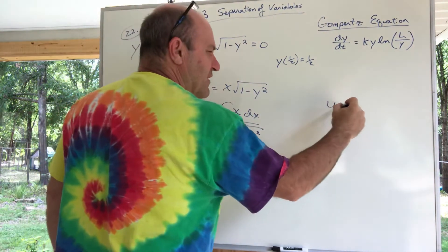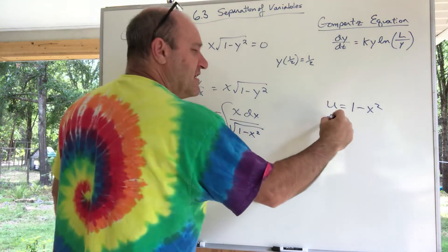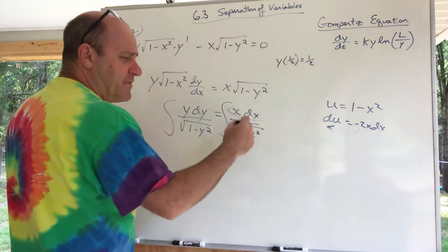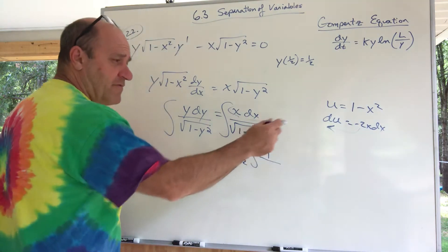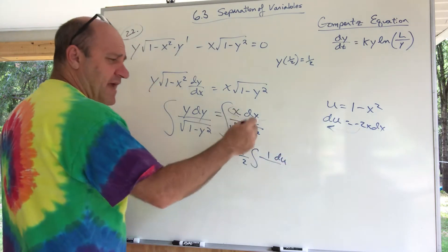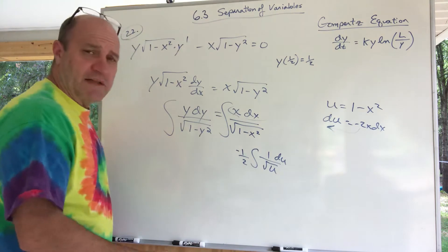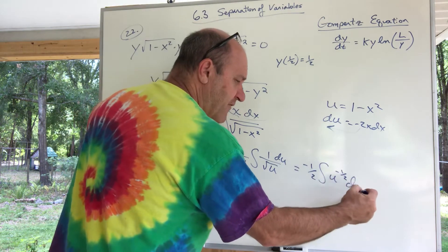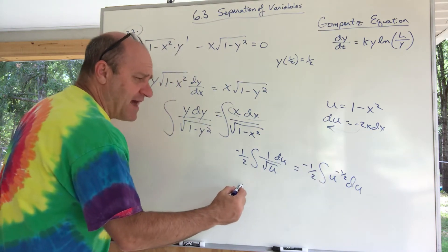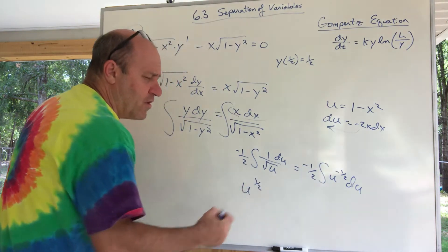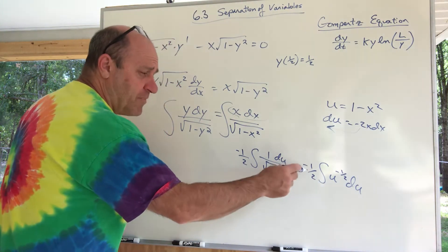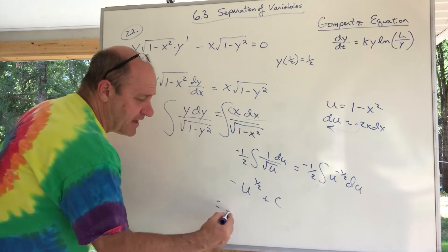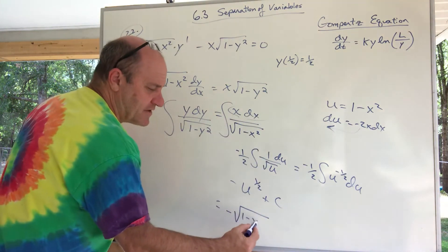For the u-substitution: let u equal 1 minus x squared. Then du equals negative 2x dx, so negative 1/2 du equals x dx. The integral becomes negative 1/2 times du over square root of u. That's a power rule — not a log — since it's u to the negative 1/2. Applying the power rule: add 1 to the exponent to get u to the 1/2, then divide by 1/2 which means multiply by 2. The two and negative 1/2 cancel, leaving a negative sign, plus C. So the answer is negative square root of (1 minus x squared) plus C.